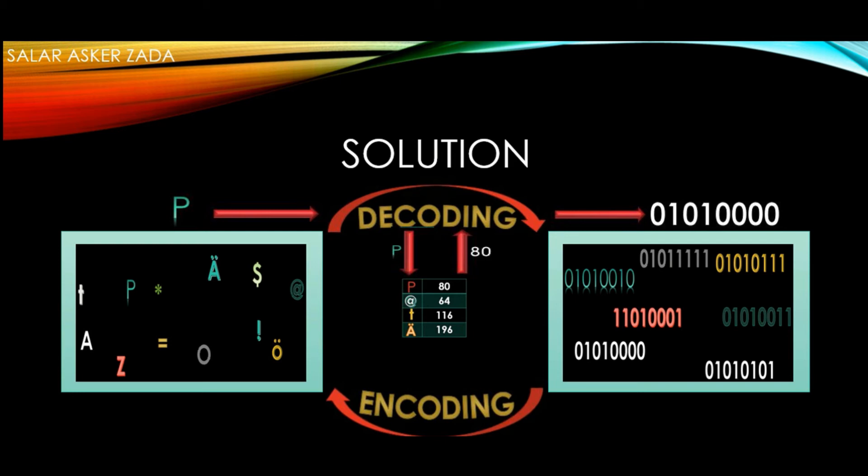After the processing, the computer sends back the result in binary form. Now the encoding system comes in action. The encoding system receives binary, converts binary into decimal, and then makes a request to the ASCII table and asks for the character symbol equivalent to that number. The ASCII table fulfills the request and returns the character symbol to the encoding system. The character symbol is then sent back to the screen. This is a simple demonstration about how decoding and encoding works and the role of ASCII table.